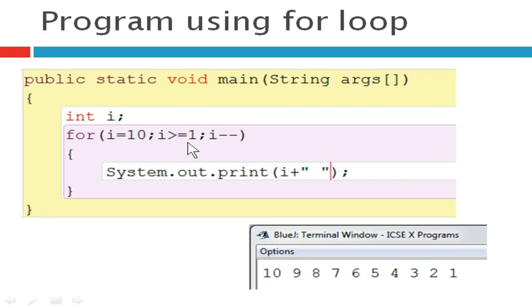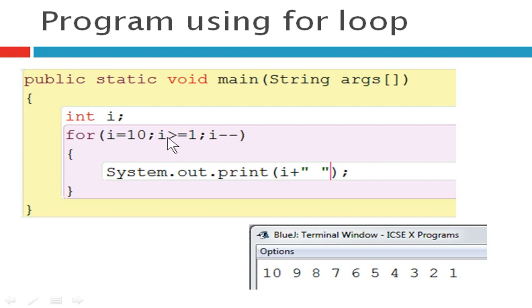Now we are going to see another example where it goes in reverse order. The initial value is 10 and the final value is 1, so you should use a decrement statement to print in reverse order. The condition is also changed to greater than or equal to 1. The routine is the same: it initializes the value, checks the condition, executes the statement, and then decreases the value. It goes on until it becomes 1, and you can see the numbers printed from 10 to 1.